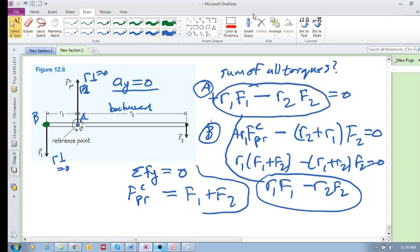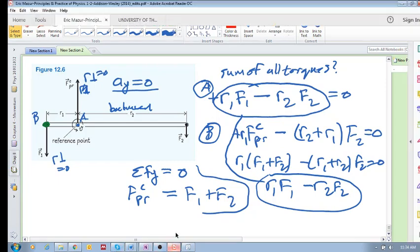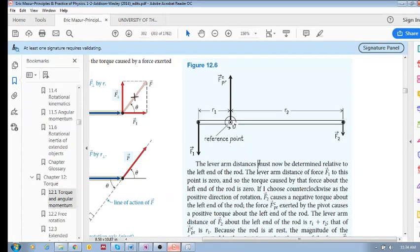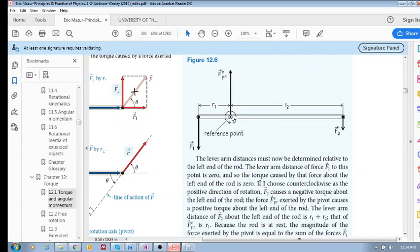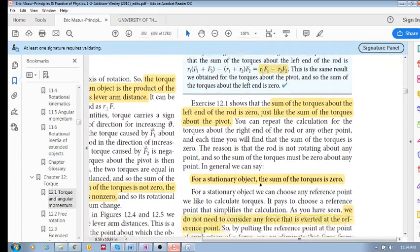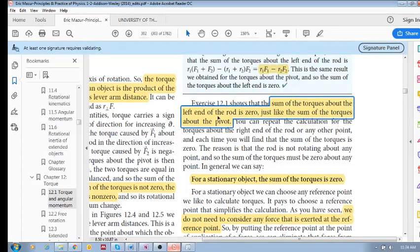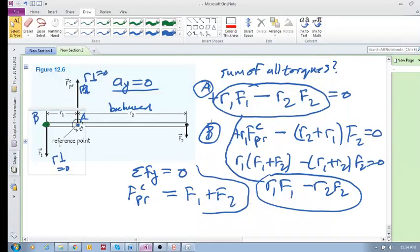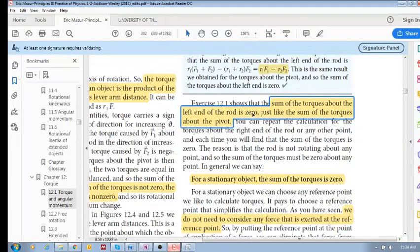So the conclusion here - the textbook gives us a nice conclusion - is that the sum of the torques about the left end is zero, just like the sum of the torques about the pivot.